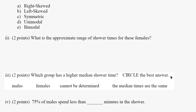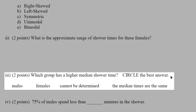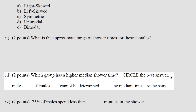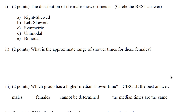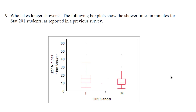Next, which group has a higher median shower time? In box plots, the median is the line through the middle of the box. It's pretty easy to see that the median shower time is higher for females, because the line through the middle of their box plot is higher.